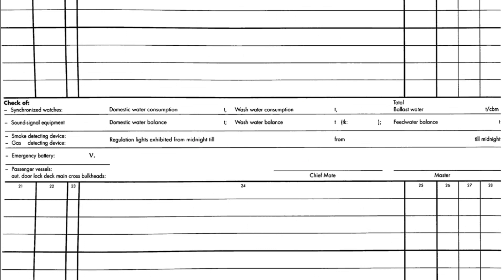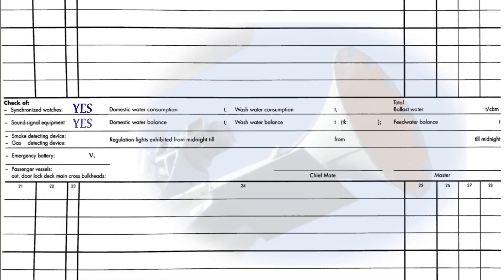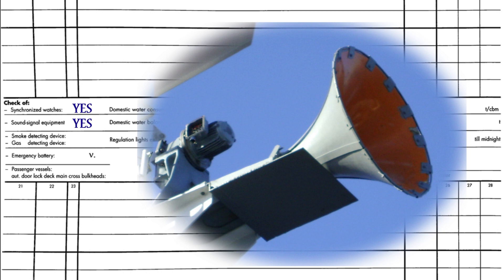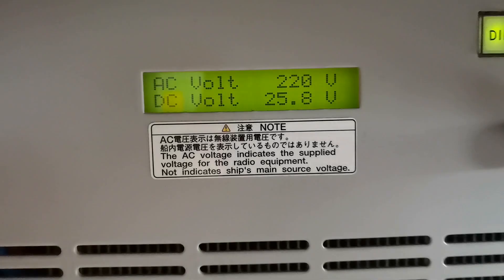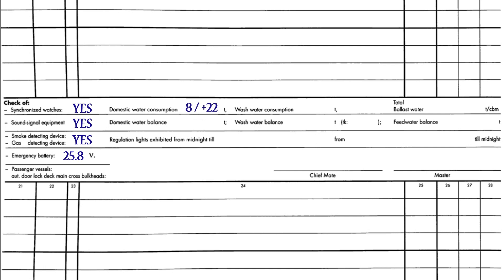Let's also take a look at another page of this deck log. Here are some checks that should also be done and noted by the second officer: synchronized watches; sound signal equipment — the manually operated and electric whistle, and general alarm button, usually checked at noon; smoke detecting device; emergency battery; domestic fresh water consumption and balance; total ballast water; and navigation lights exhibited — in practice at sea the lights are always on.